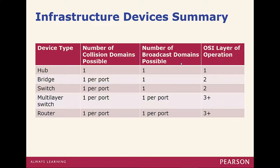Infrastructure device summary: a hub has one collision domain and one broadcast domain, operating at layer 1. Bridges and switches have one collision domain per port, one broadcast domain, and operate at layer 2. Multi-layer switches have one collision domain per port and one broadcast domain per port, operating at layer 3 — or layer 2, depending on the switch port mode. Routers have one per port for both collision and broadcast domains, and operate at layer 3.